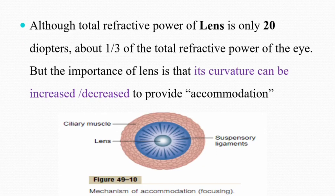Although the total refractive power of the lens is only about 20 diopters — one-third of the total — the importance of the lens is much greater than that of the cornea. This is because we can adjust the lens but not the cornea; the cornea is a fixed structure. We can increase or decrease the curvature of the lens to focus an object on the retina, which is called accommodation. The importance of the lens lies in this ability to adjust its curvature depending on whether we are viewing a distant or near object. This will be discussed in the next video. Thanks for watching — please like, share, and subscribe. Happy learning!